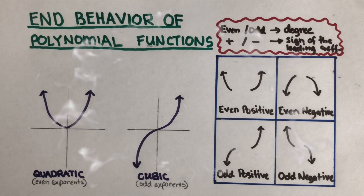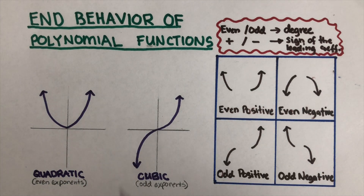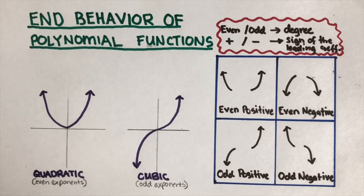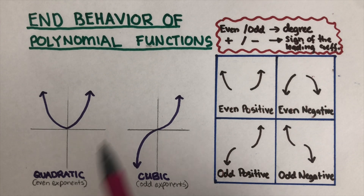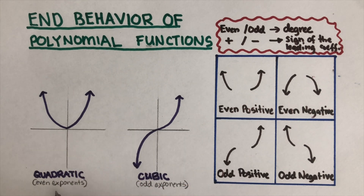Hello everyone, today we are going to describe the end behavior of polynomial functions. If you want to know what polynomial functions are, or when we say that an expression is polynomial or not, I will put a link in the description box below. We're talking about the end behavior of polynomials, and all polynomial functions will resemble one of these two types of graphs when graphed.